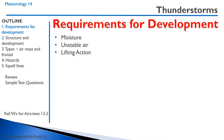There are three meteorological requirements for the development of thunderstorms. The first is moisture — we can't have thunderstorms when the air is dry. We need unstable air, and we need lifting action to move the moisture, the water droplets, to high altitudes.